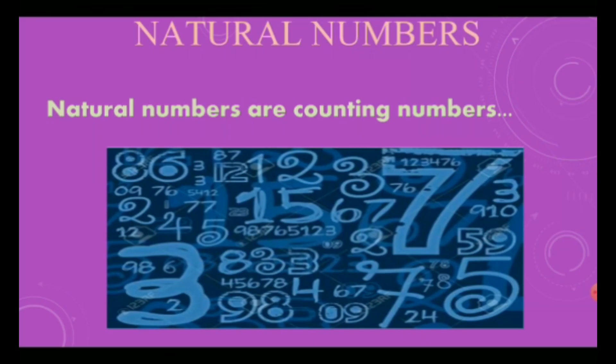Here comes the natural numbers. Natural numbers are counting numbers. Means 1, 2, 3, 4, 5, 6, 7, 8 and so on are counting numbers and called natural numbers.